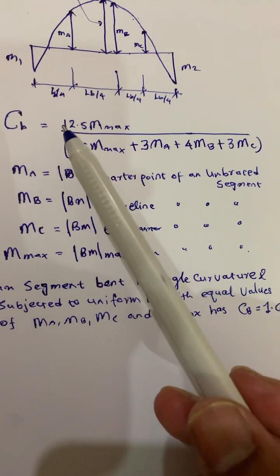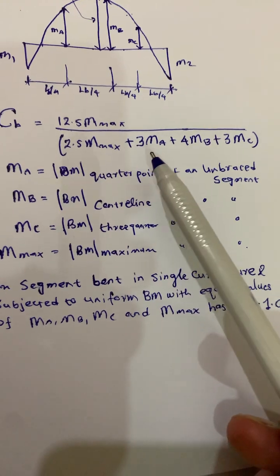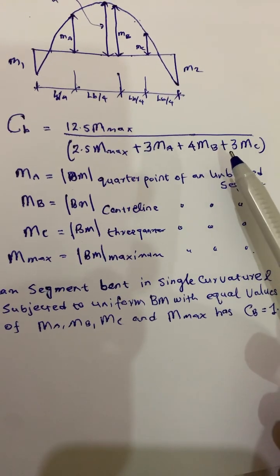So we can calculate the CB value as 12.5Mmax divided by 2.5Mmax plus 3MA plus 4MB plus 3MC.